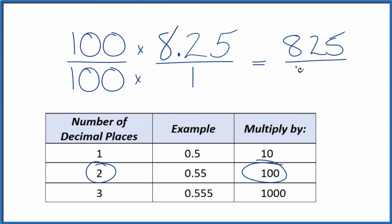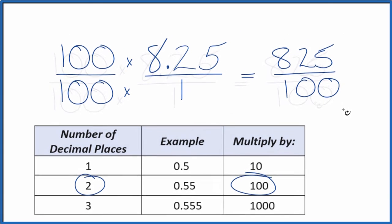100 times 1 is 100. And now we have our fraction. The decimal 8.25 equals the fraction 825 over 100. And we can simplify this.